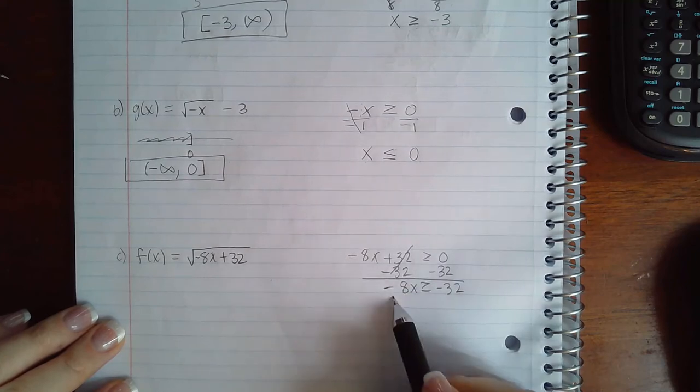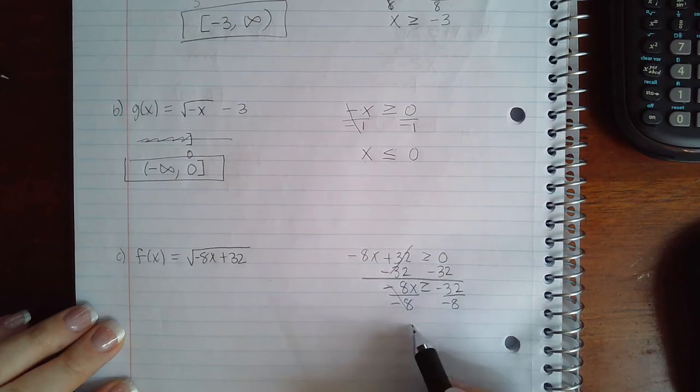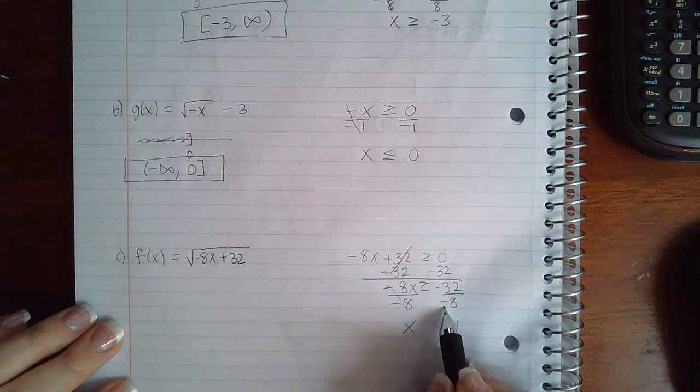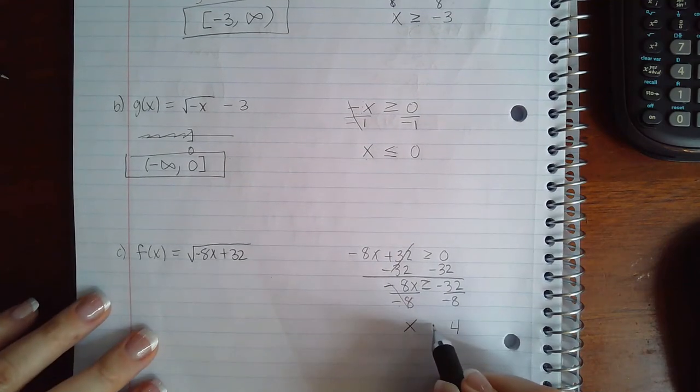And then we're going to continue solving for x by dividing by negative 8, so we get x by itself. Over here we get positive 4, but because we did divide by a negative we have to flip the sign over.